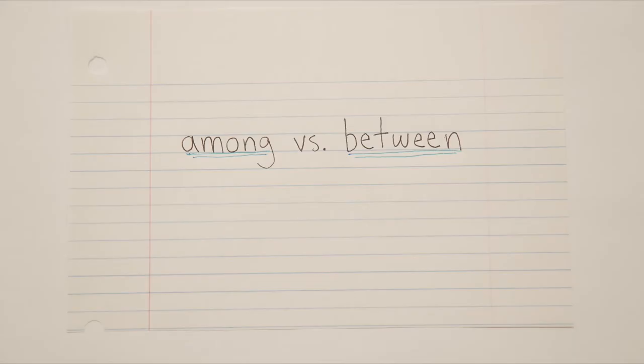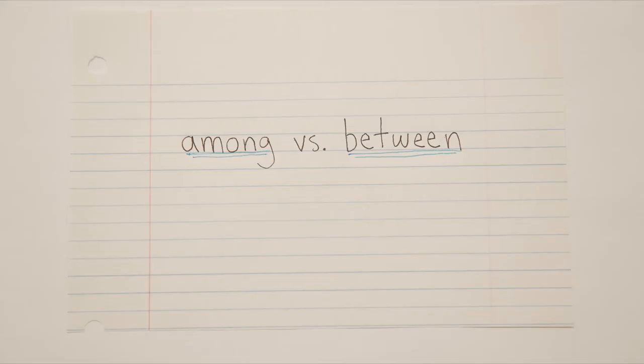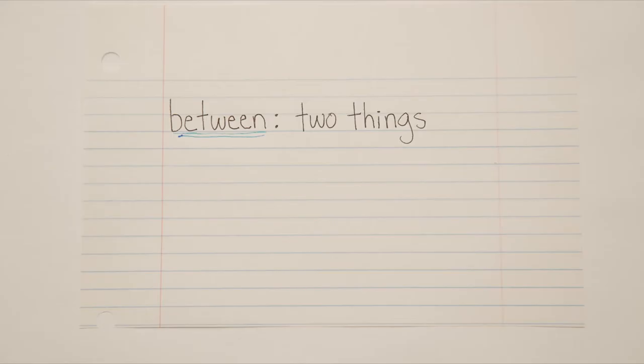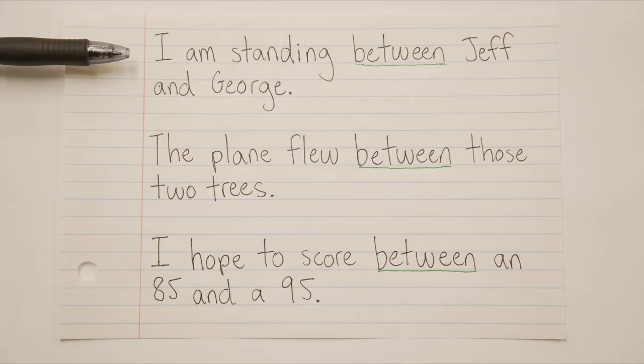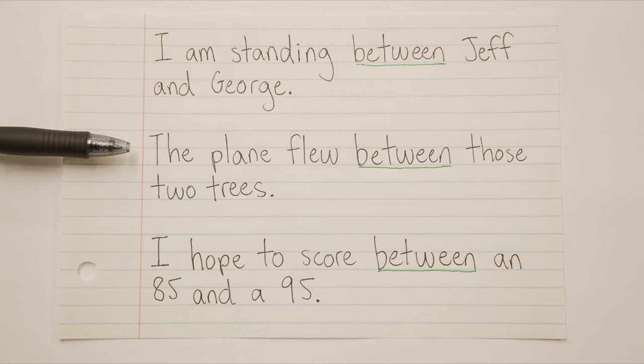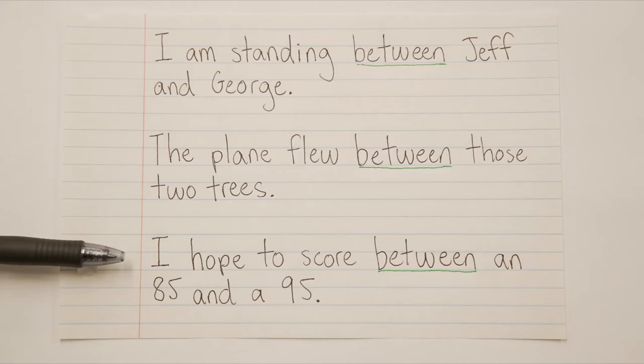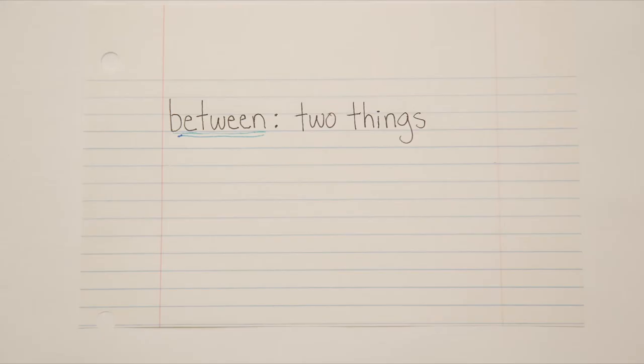The first set of words we're going to be looking at is among and between. Honestly, this is about as simple as it gets. If you're talking about exactly two things — no more, no less — you use between. I am standing between Jeff and George. The plane flew between those two trees. I hope to score between an 85 and a 95. For two things and two things only, we use between. For three or more things, we use among.